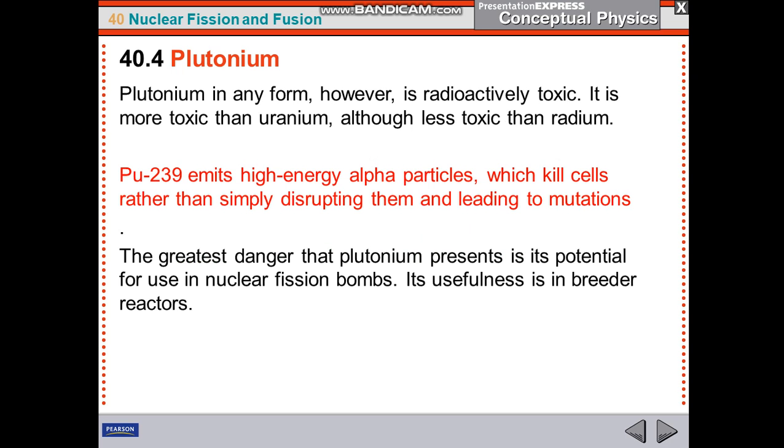Pu-239 emits high-energy alpha particles which kill cells rather than simply disrupting them and leading to mutations. But the greatest danger that plutonium presents is its potential for use in nuclear fission bombs.